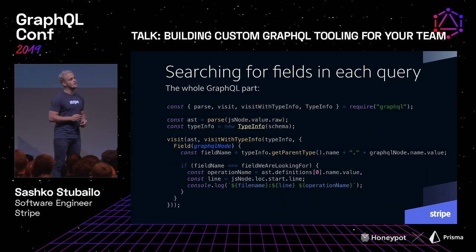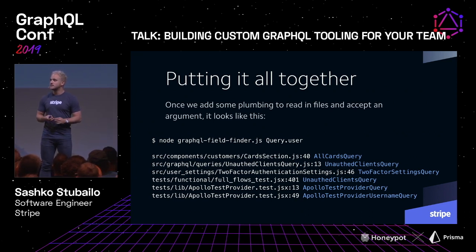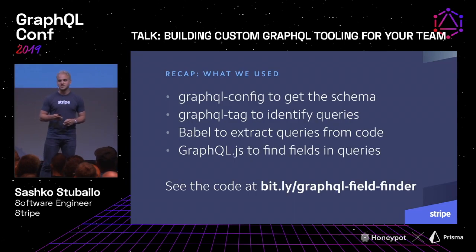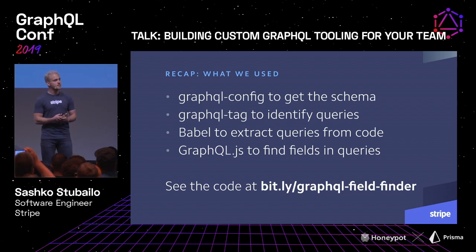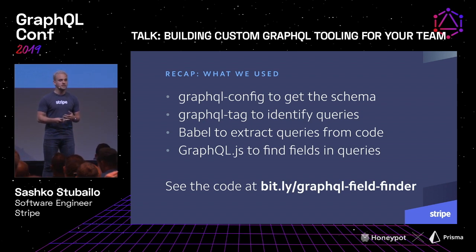Putting it all together, we've pretty much built that tool. You can call it passing a type and a field name, and it prints out all the different files that contain that field. You can download the code — I have a gist on GitHub at bit.ly/graphql-field-finder. We used GraphQL Config to get access to our schema, GraphQL tag to identify all the queries in our JavaScript codebase, Babel to extract query strings from JavaScript code, and GraphQL JS to traverse those queries and find the ones we were looking for.